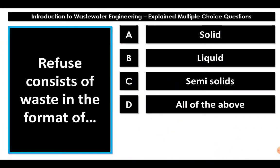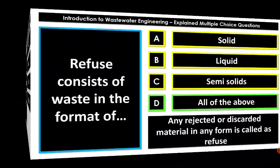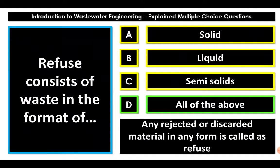Question three: refuse consists of waste in the format of — is it solid, liquid, semi-solid, or all of the given formats? Refuse consists of waste in the format of solid, liquid, and semi-solid. Any rejected or discarded material in any form — whether solid, liquid, or semi-solid — is called refuse. Whatever we are rejecting or discarding is called refuse.